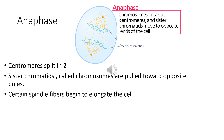Next comes the anaphase. The chromosomes will break at the centromeres and the sister chromatids will move to the opposite ends of the cell. The sister chromatids are moving to the opposite poles. The centromeres split into two and the sister chromatids — now called chromosomes — are pulled towards the opposite poles. Certain spindle fibers begin to elongate the cell.